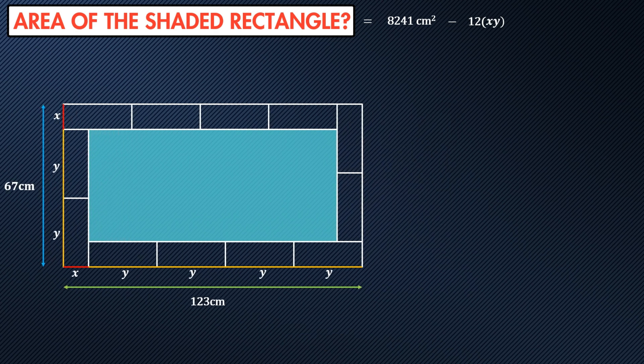We can set up two equations here, one for the length and one for the width. So we would have the length as x plus 4y equals 123 and the width x plus 2y equals 67.